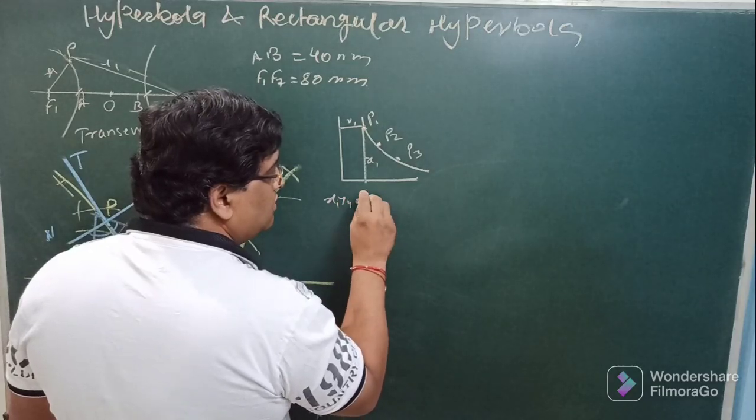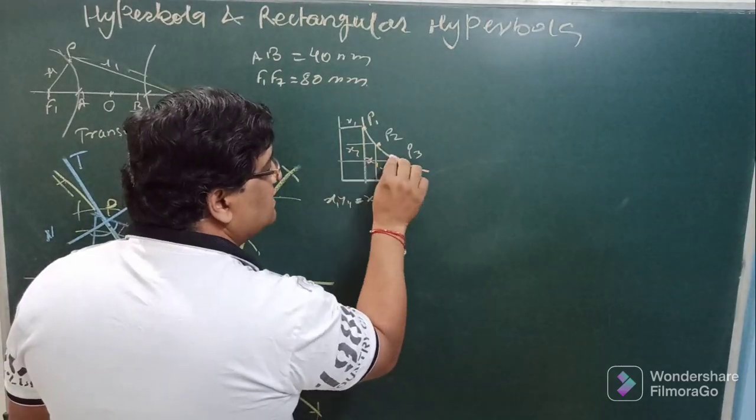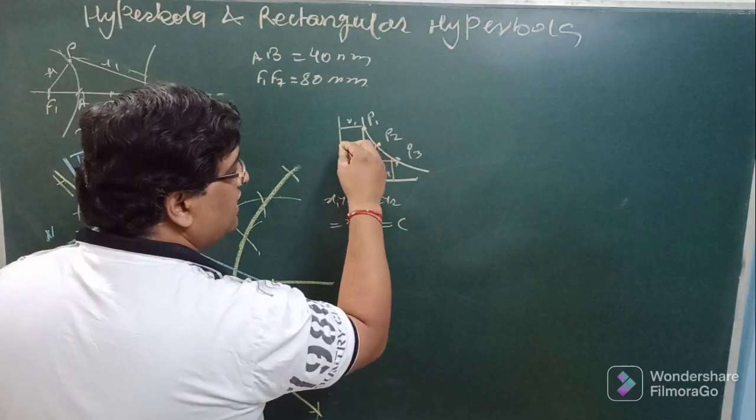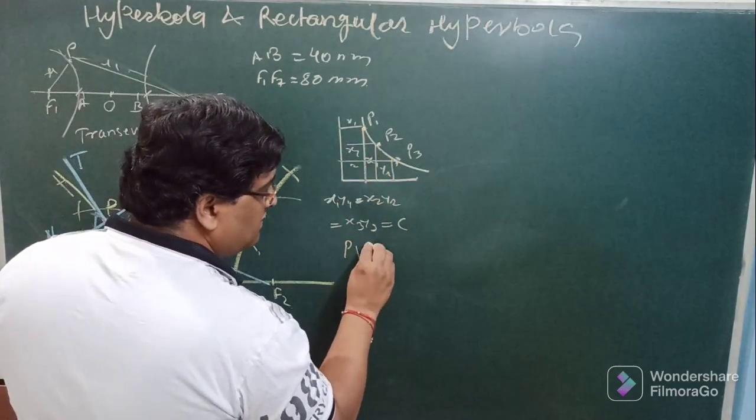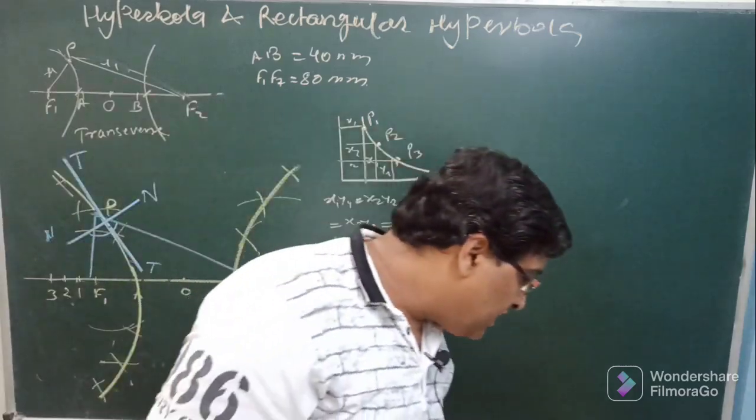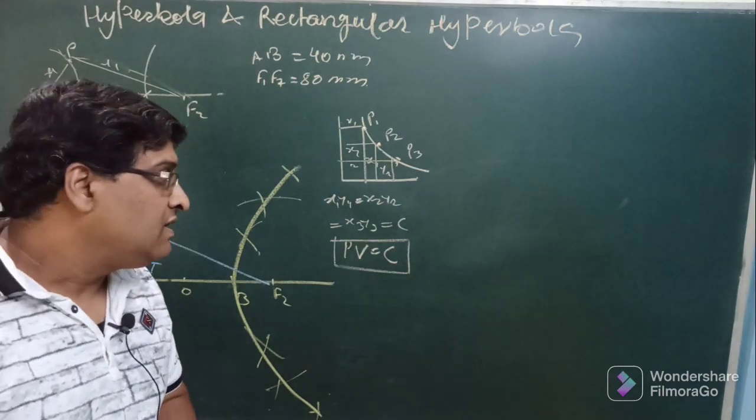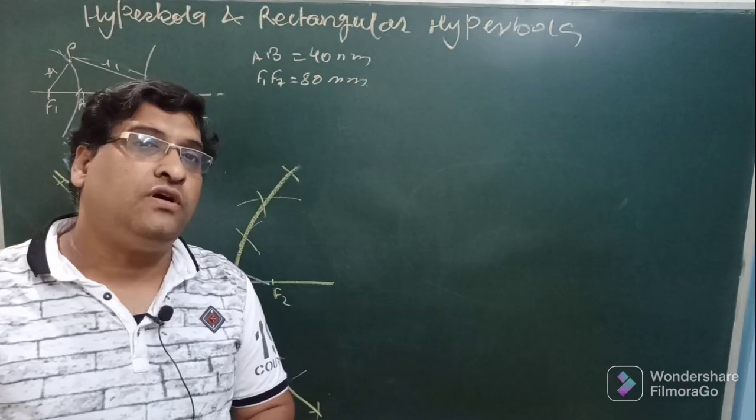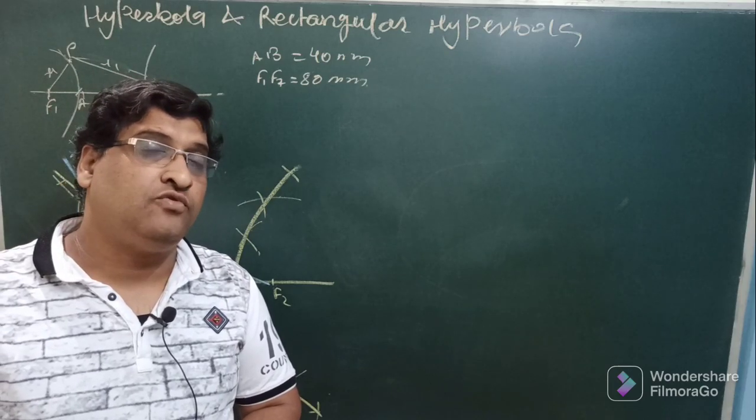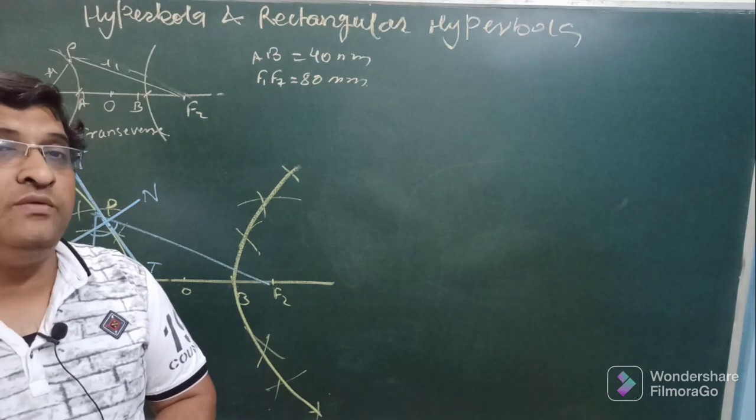These are two mutually perpendicular lines and this is the curve. At any instance on this curve if I consider some points p1 p2 p3, product of its distance from vertical and horizontal lines, this x1 multiplied by y1 will be equal to constant. So x1 y1 equals x2 y2 equals x3 y3, so p v is equal to constant. This curve is termed as following the Boyle's law.